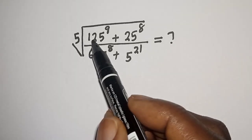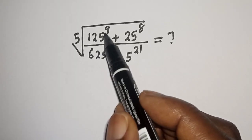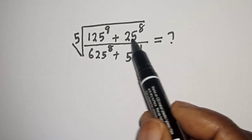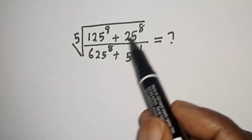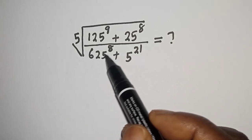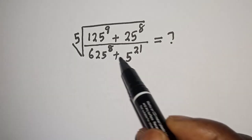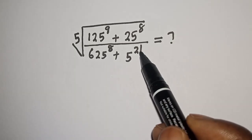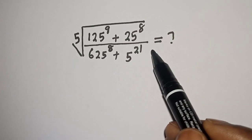5th root of 125 raised to power 9 plus 25 raised to power 8, divided by 625 raised to power 8 plus 5 raised to power 21 — is equal to what?